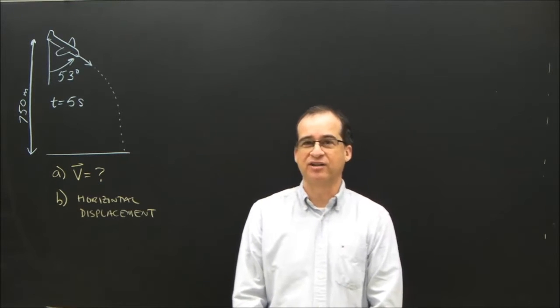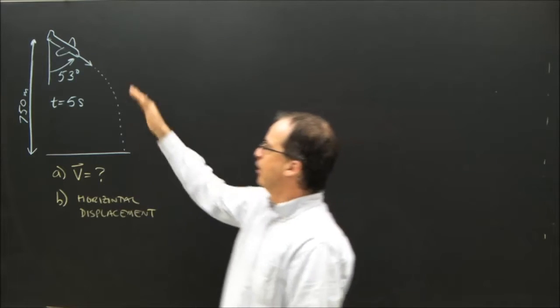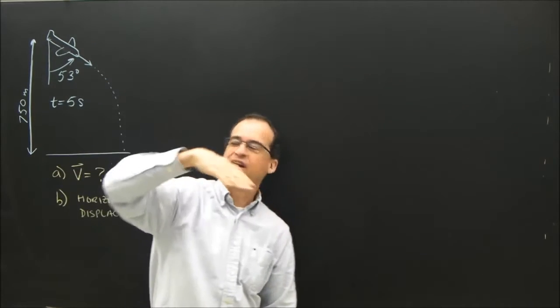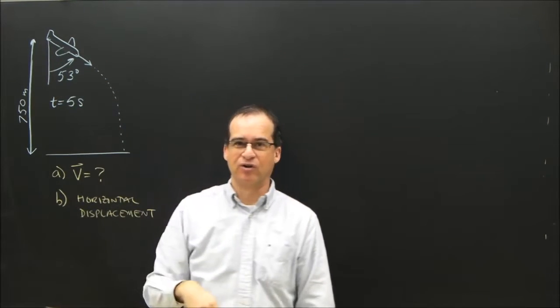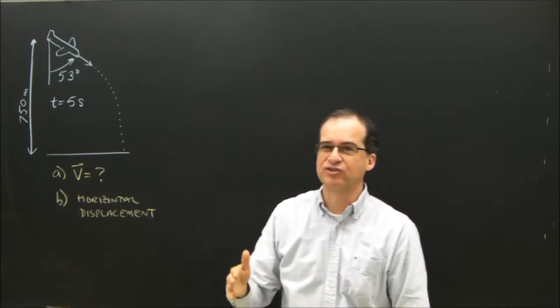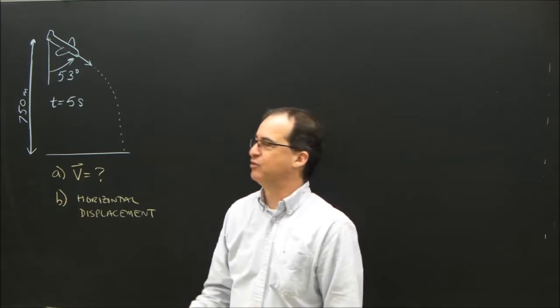Okay, let's try another projectile problem. In this one, an airplane is diving at an angle of 53 degrees to the vertical. That's a little unusual to give the angle to the vertical, so we've got to be careful we put the angle in the right place.